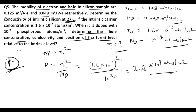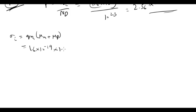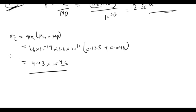For intrinsic silicon, the conductivity formula is σi = q · ni · (μn + μp). Here q = 1.6 × 10⁻¹⁹, ni = 1.6 × 10¹⁶, μn = 0.125, and μp = 0.048. On calculating, the intrinsic conductivity comes out to be 4.43 × 10⁻⁴ S/m.